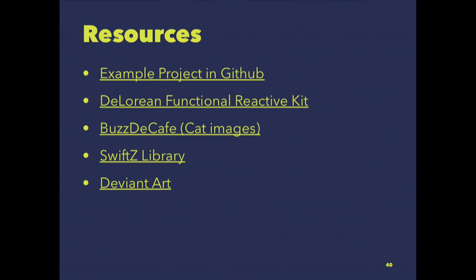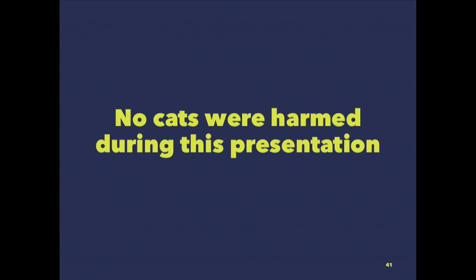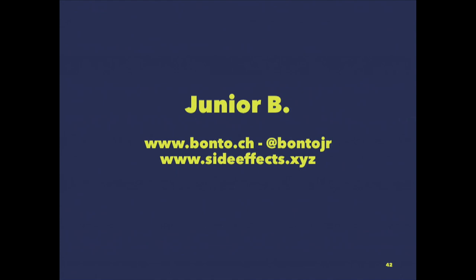If you want to check my code, it's on GitHub. I created a small functional reactive kit in Swift called DeLorean — pure Swift — and some of this code is inside that framework. I took the images from a nice blog called 'Haskell for All'. There's also the SwiftZ library for results and optionals. No cats were harmed during this presentation. I'm Junio — if you have any questions, please stop me around, or here are my contacts. Thank you very much for your time.